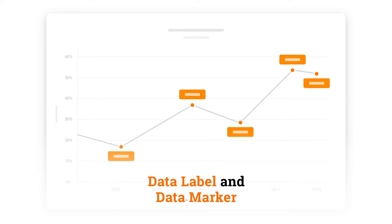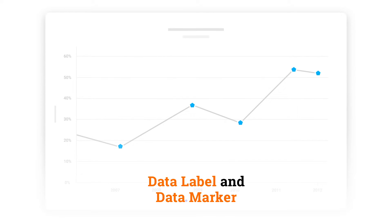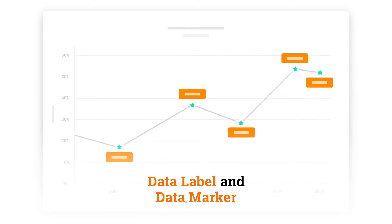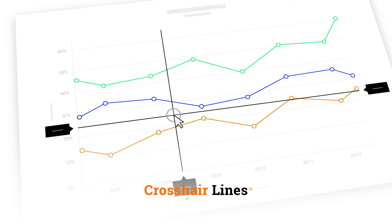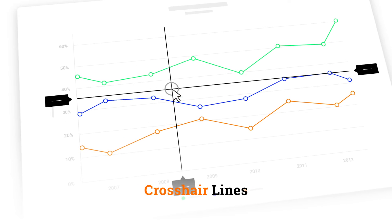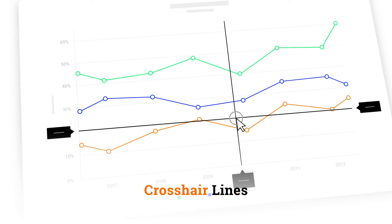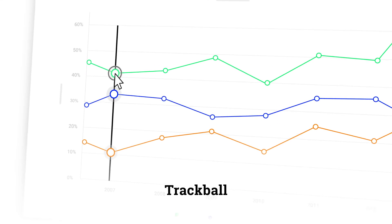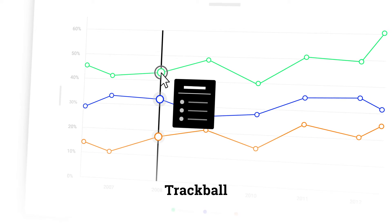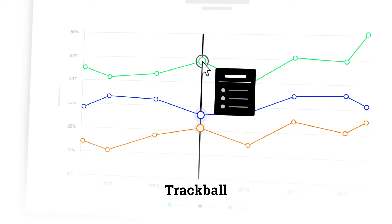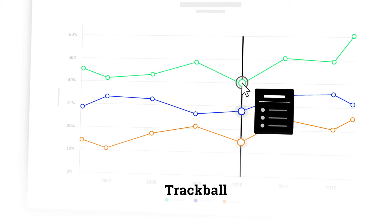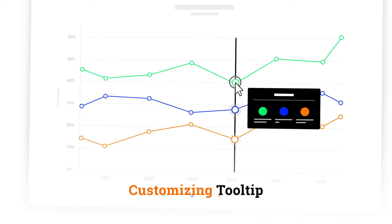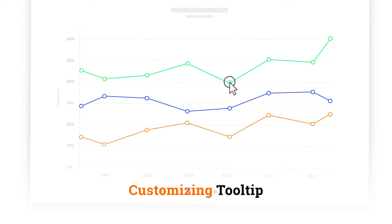Data label and data marker features help to display additional information about the data. View the exact value of the axis at the position where the cursor is currently located using the crosshair lines. The trackball feature helps to show data values on a tooltip. Customize your tooltip using templates.